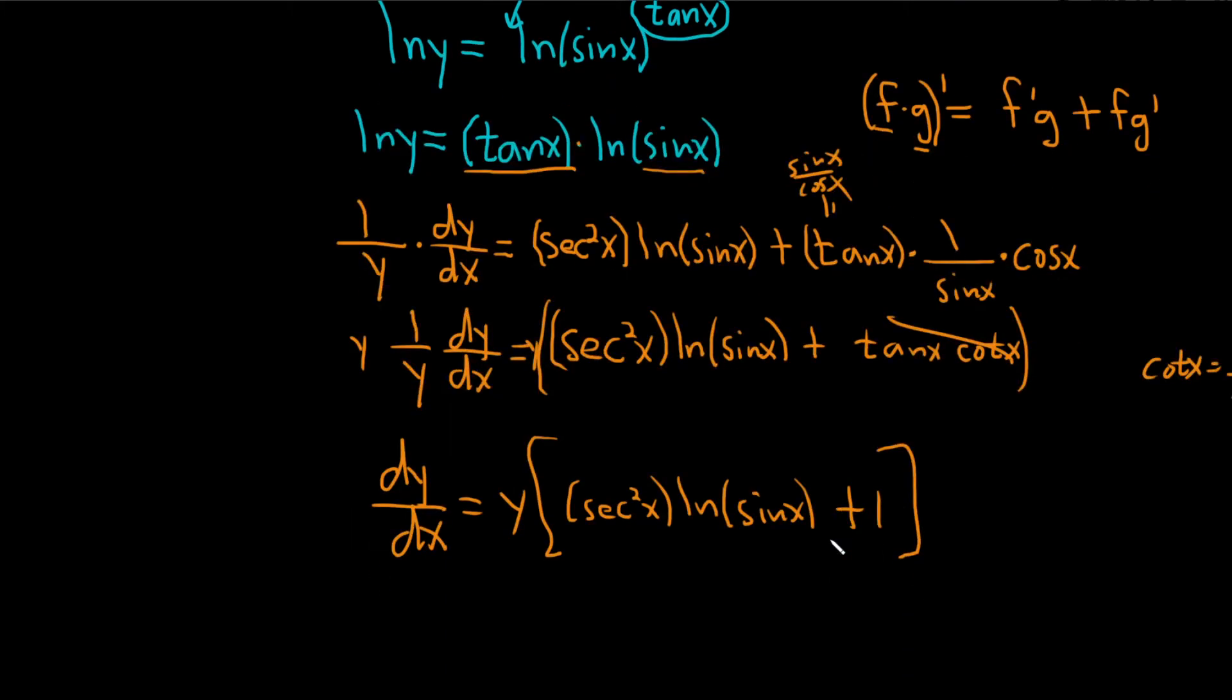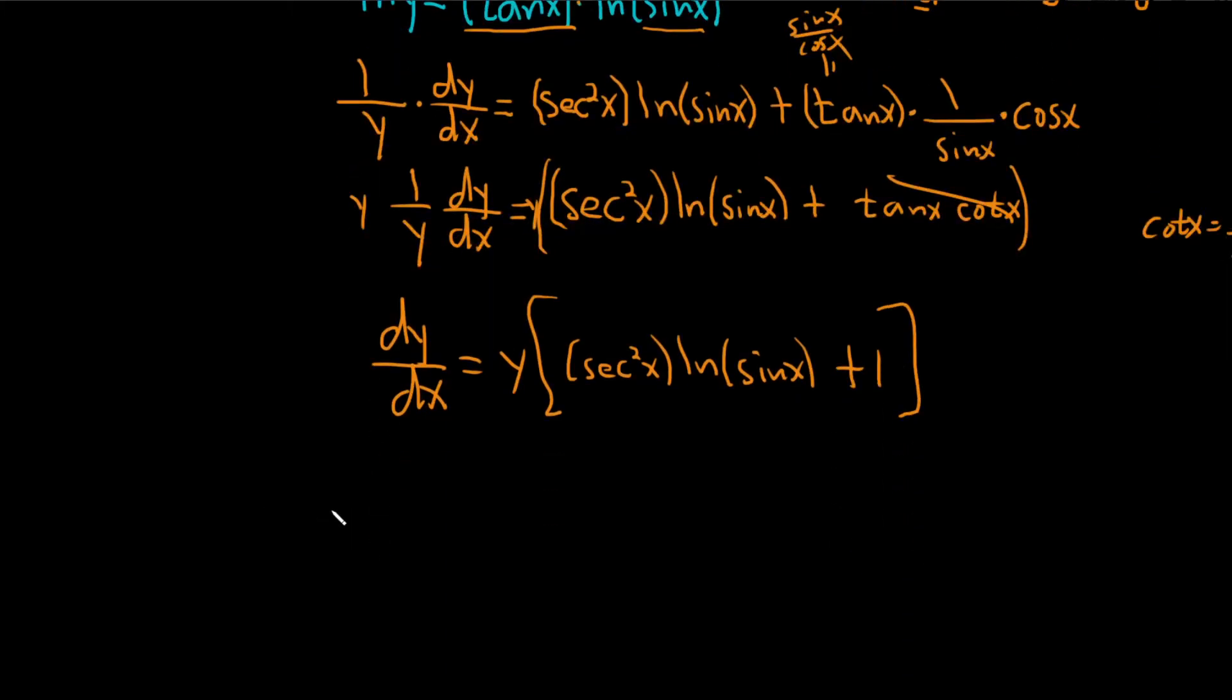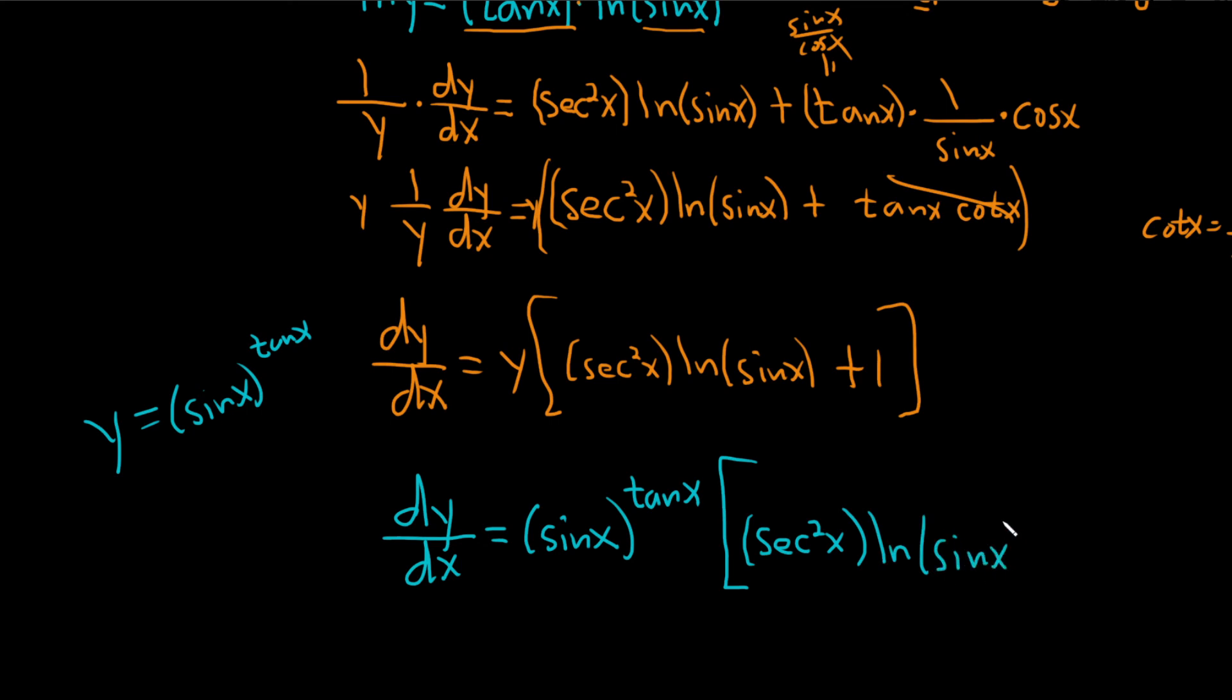And that's okay, we can keep going. I'll just go one more step, just for completeness. So, dy dx is equal to, well, y is the original question, right? Remember, y was equal to the sine of x to the tangent of x. That was the original function. So, this will be the sine of x to the tangent of x, and a bracket, and this will be secant squared x in parentheses. And then we have the natural log of sine x. Then we have our plus 1 here on the outside. And that would be the derivative of y with respect to x, using logarithmic differentiation.